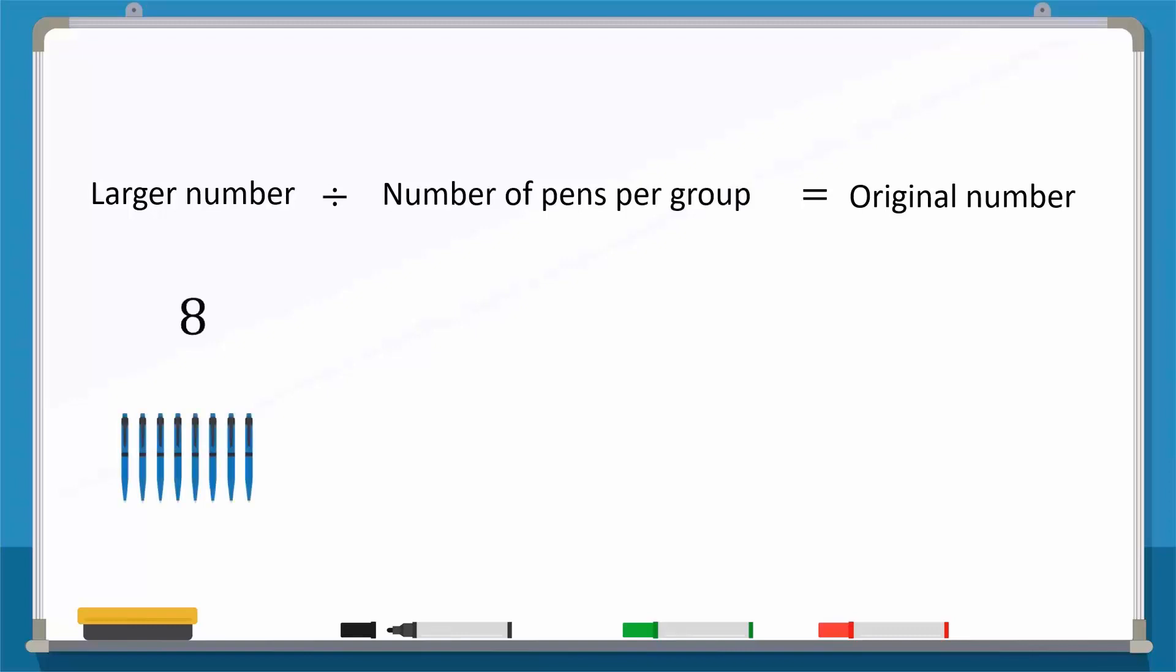Now, to return to the original number, we write the larger number first and then divide by the total number of pens in each group. This means 8 divided by 2 results in 4. So, we have 4 groups like we had originally.